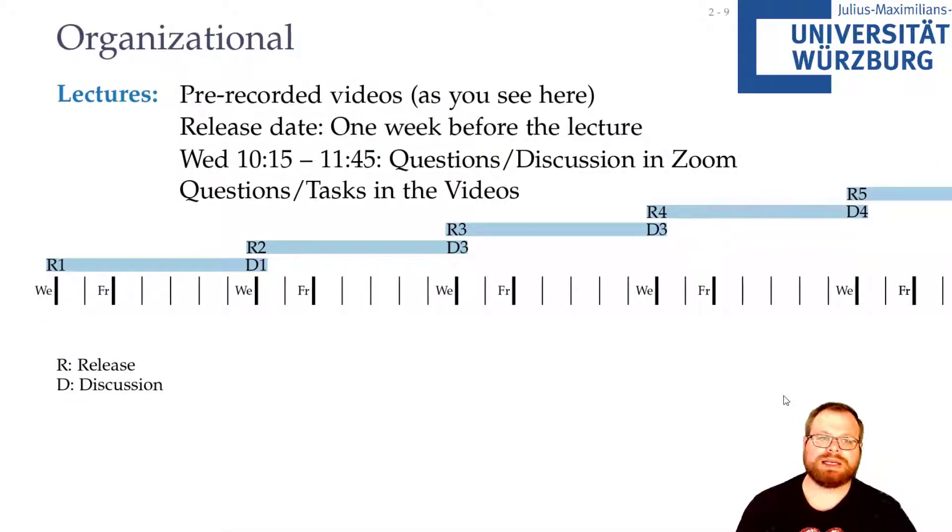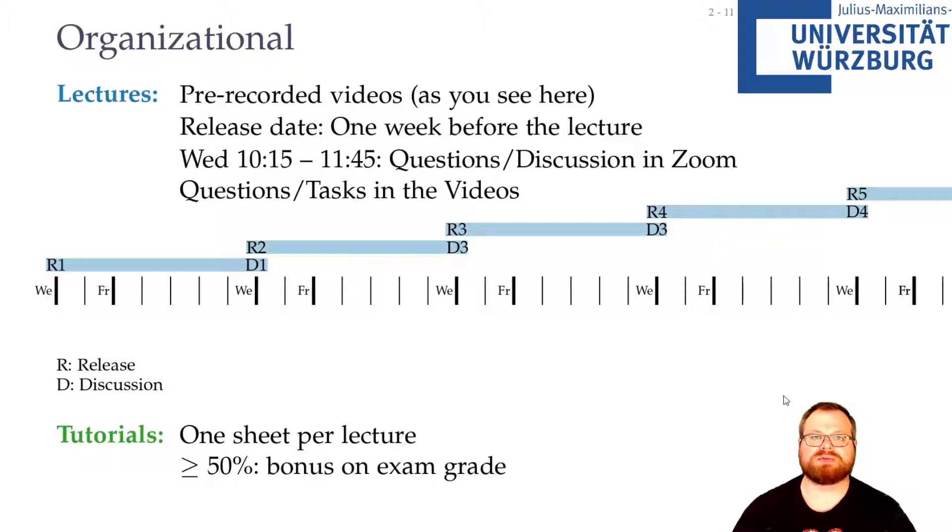There will be a weekly exercise sheet, and on the same day as the release date of the video we will also give you the exercises. There will be 20 points per exercise sheet, and if you get at least 50% of the total points of all the sheets, then in the end you will get a bonus on the exam grade. So your grade will be better by 0.3, but only if you pass the oral exam at the end.